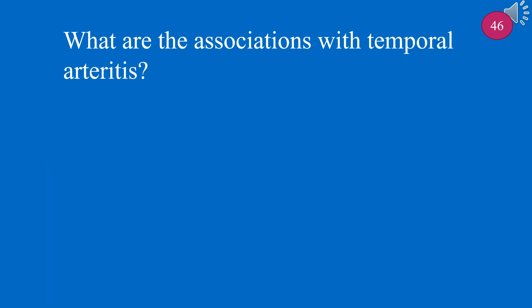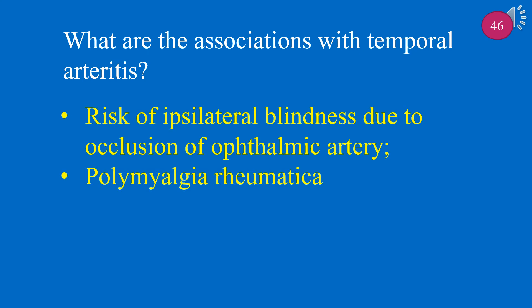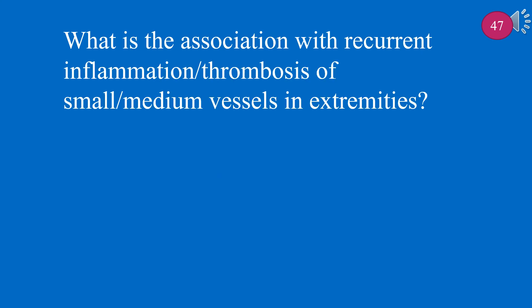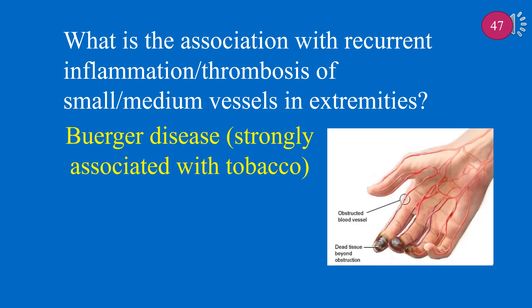What are the associations with temporal arteritis? With temporal arteritis, think of risk of ipsilateral blindness due to occlusion of the ophthalmic artery, and polymyalgia rheumatica. What is the association with recurrent inflammation and thrombosis of small and medium vessels in extremities? Buerger disease, which is strongly associated with tobacco.